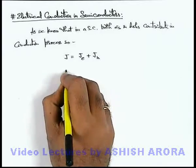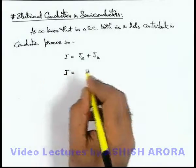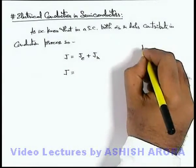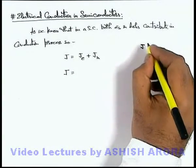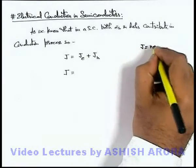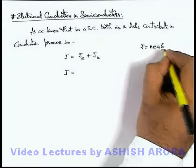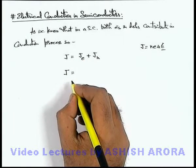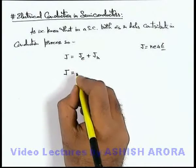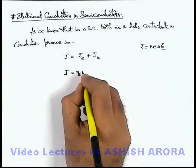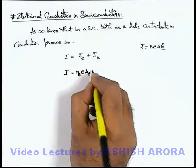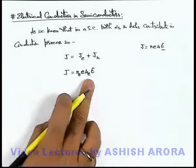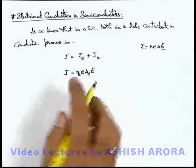And here if we substitute the values of current densities which we already studied in the previous section, we have studied in electrical conduction of metal that J can be written as n_e·e·μ_e. If E is the electric field applied, then current density due to transportation of electrons we can write as n_e·e·μ_e·E, because here n_e is the electron concentration and μ_e will be the mobility of electrons.